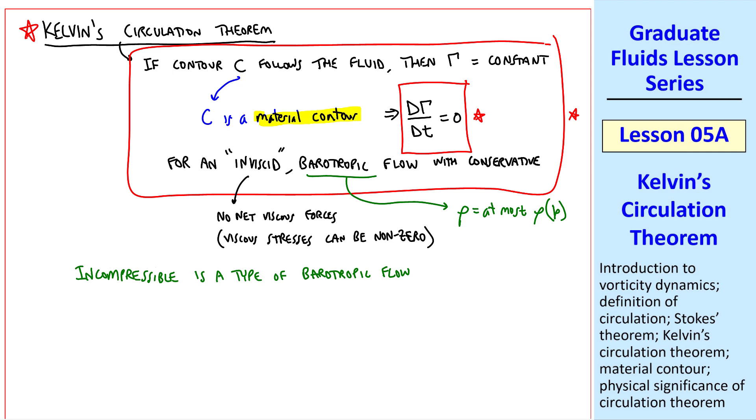There's one other caveat. It must also have conservative body forces. I don't want to get into too much detail here, but a conservative body force can be expressed as the gradient of a scalar. For example, gravity. We typically write the gravity vector as negative the gradient of gz, where z is up and g is down. So gravity is a type of conservative body force, and that's the only body force we'll deal with in this course. So Kelvin's circulation theorem will apply to the flows that we deal with.